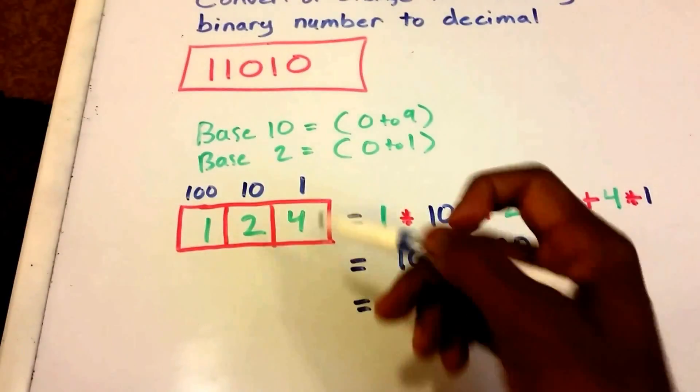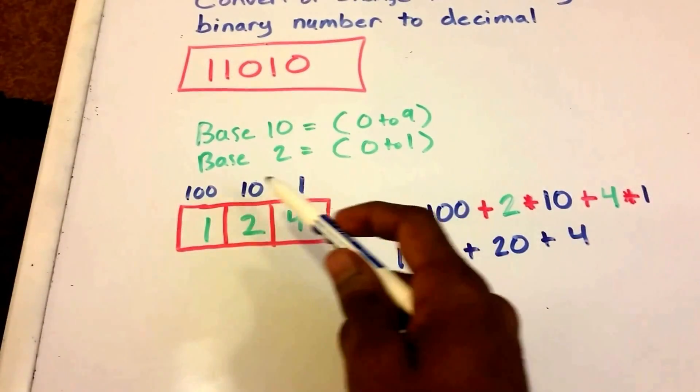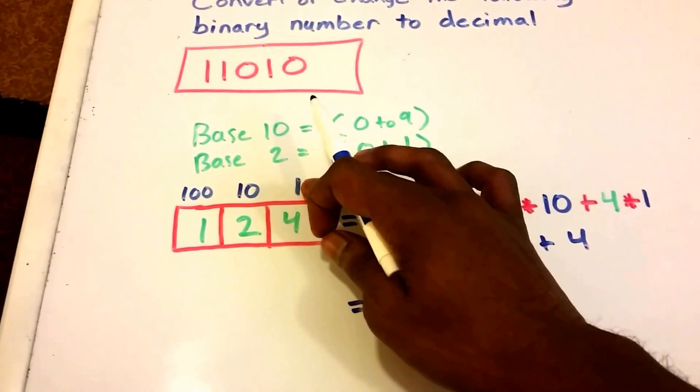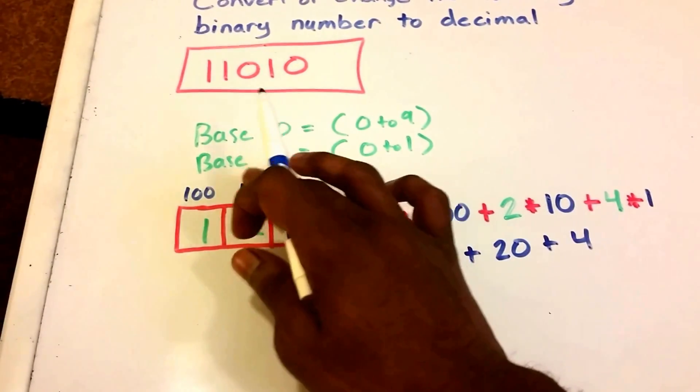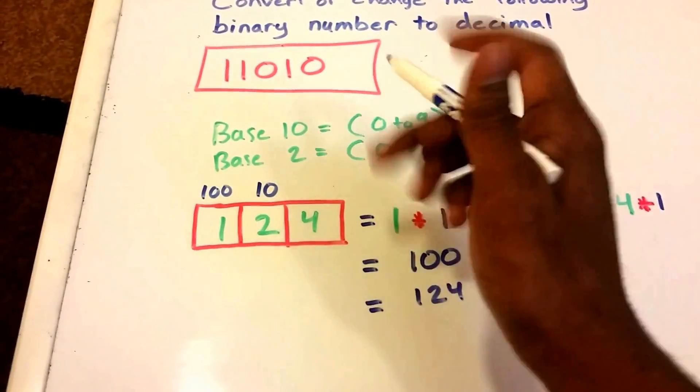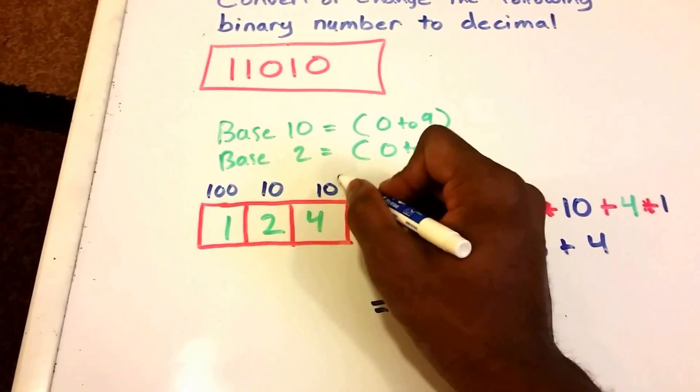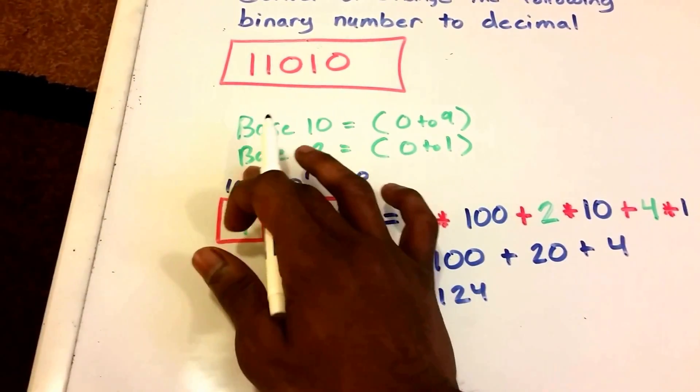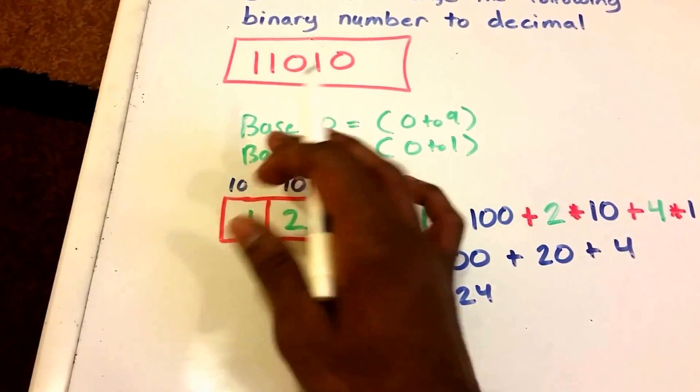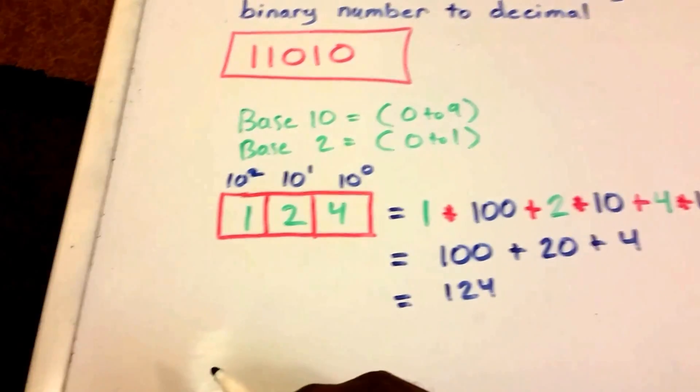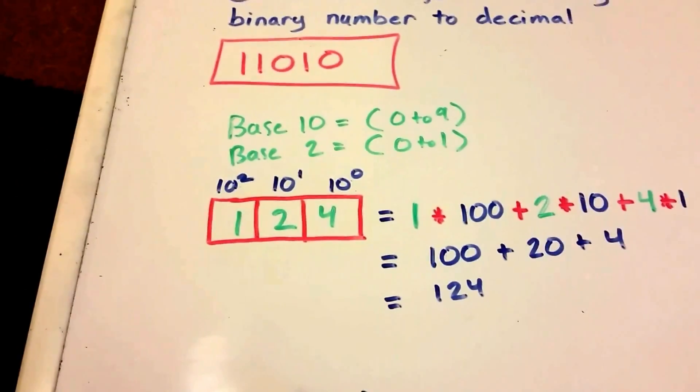So that's fine and all. So these columns here we can actually rewrite them. This 1 is really just the power of 10, this 10 is the power of 10, and 100 is the power of 10. So more specifically, this is 10 to the power of 0, this is 10 to the power of 1, and if you see the pattern already, this here will be 10 to the power of 2.